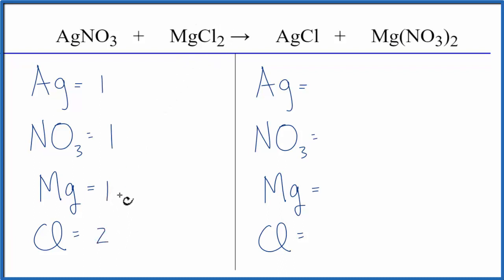and two chlorines. On the product side, one silver, two nitrates, one magnesium, and one chlorine. So to balance the equation, why don't we fix the nitrates first? I have two on this side, I have one on this side. If I put a coefficient of two, this two applies to everything. I have the one nitrate times the two. Now my nitrates are balanced.